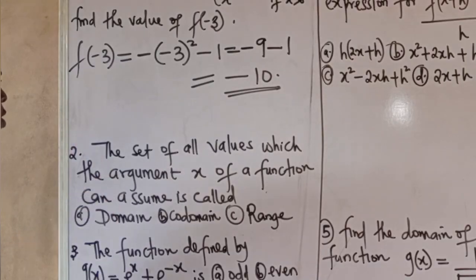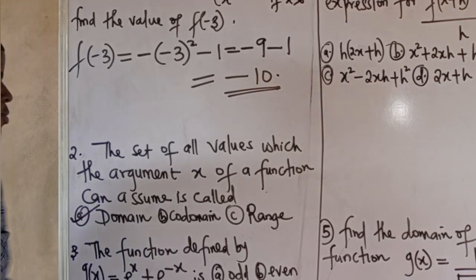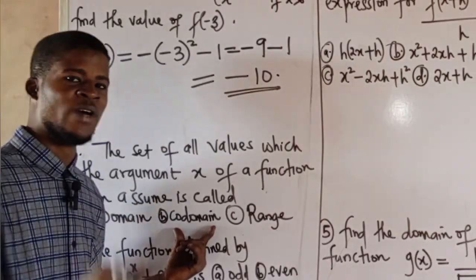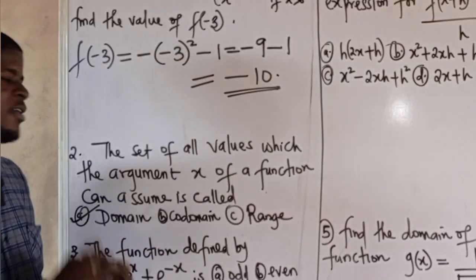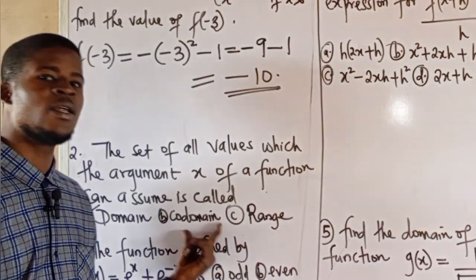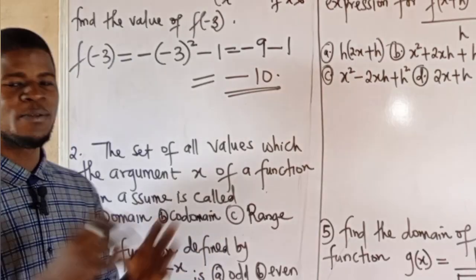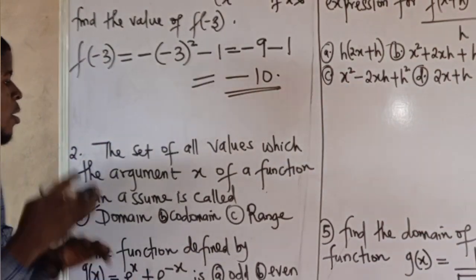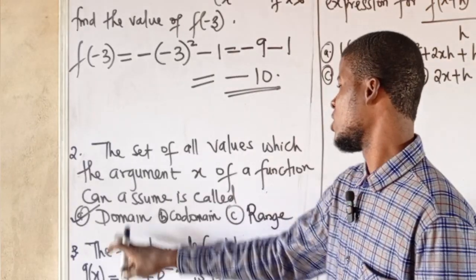The second question: the set of all values which the argument x of a function can assume is called the domain. We have domain, co-domain, and range. All input values are called the domain. All possible output values are called the co-domain. Those elements in the domain directly mapped onto elements in the co-domain form the range. The range is actually a subset of the co-domain. All input values for which the function is defined make up the domain.